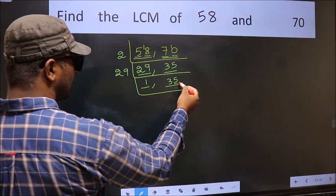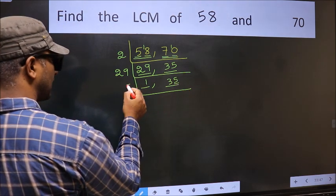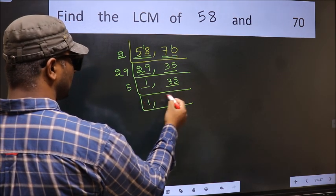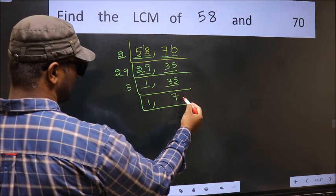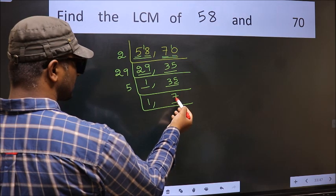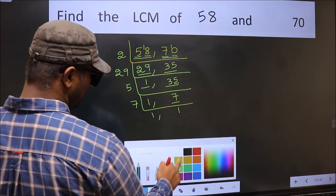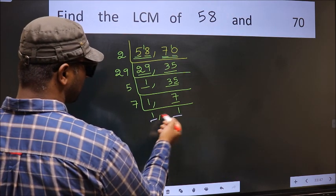Here the last digit is 5, so directly take 5. When do we get 35 in the 5 table? 5×7=35. Now here we have 7. 7 is a prime number, so 7×1=7. So we got 1 in both places.